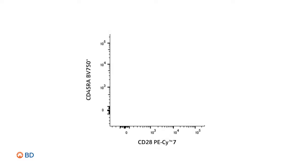As a next step, you should assess your panel resolution to determine if you can identify your population of interest and clearly resolve a negative and positive population for each marker. If the answer is yes, your panel is a success. You have designed a panel suitable for your biological application.